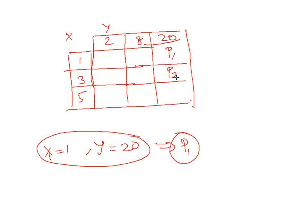Similarly we can write P2 is the probability when X is 3 and Y is 20. P3 is the probability that X is 5 and Y is 20. Now if I want to know what is the probability that Y is equal to 20, the probability of Y is equal to 20 will be nothing but the probability of 1 plus probability of 2 plus probability of 3.